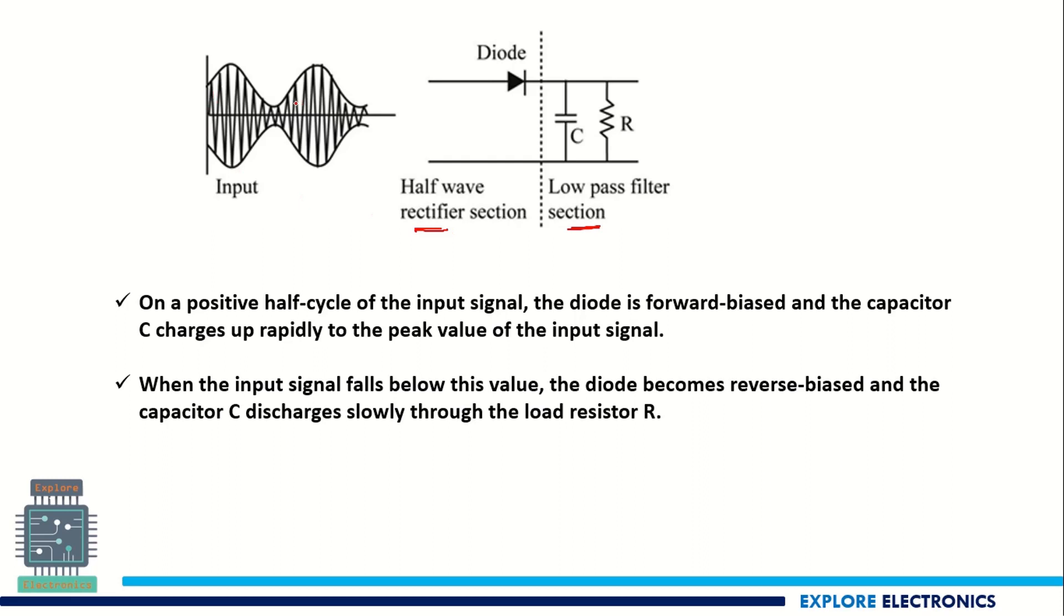What happens when the AM wave is given as input? As the input increases, this diode conducts because of the forward bias condition. Until this diode is conducting, the capacitor will be charging. This capacitor charged to the maximum value. As the input to the diode reduces and the capacitor will be charged to this maximum value, diode becomes reverse biased. Why?